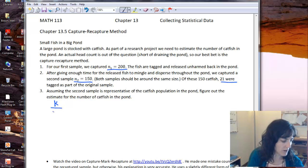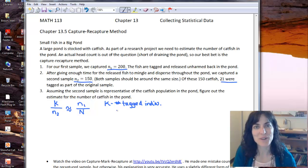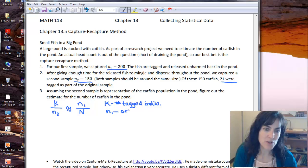K over N₂ is approximately equal—that's what that double squiggly looks like—N₁ over big N. And now we probably want to know what each of those stand for. So K is the number of tagged individuals, or animals, whatever you're tagging. And N₁ is the original capture.